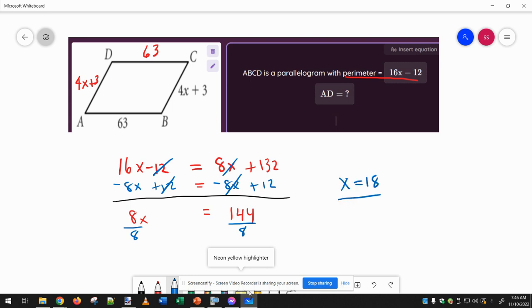So x equals 18, but it's asking us for the length of AD, and AD is right here. So I have to plug in 18 for x and do 4 times 18 plus 3. So 4 times 18 is 72, plus 3, 75. So segment AD is equal to 75.